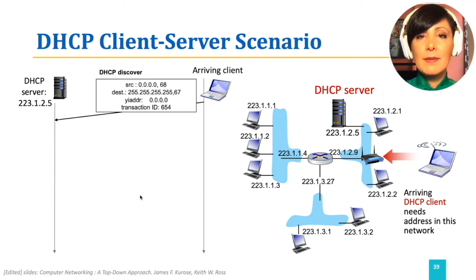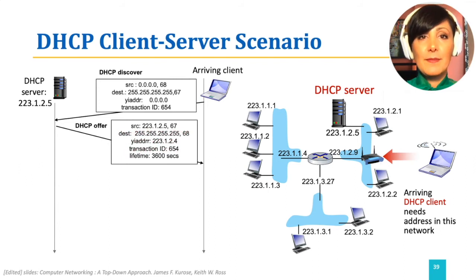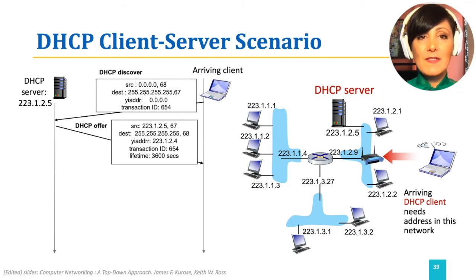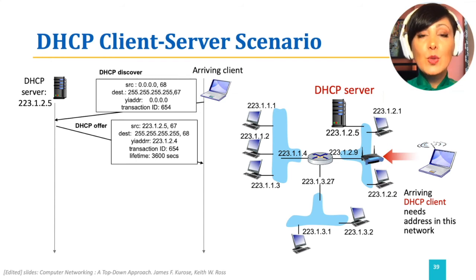In the next step, the DHCP server broadcasts a DHCP offer message announcing an IP address that could be used by this endpoint. The datagram still has the destination IP address as the broadcast address with all 255s. The source address of this datagram is the IP address of the DHCP server, which is 223.1.2.5, and it contains the offered IP address in the body of the message, which is 223.1.2.4.